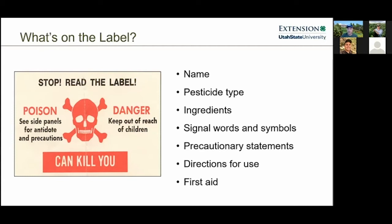Precautionary statements describe certain precautions to protect both the applicator and off-target sites from pesticide exposure. Directions for use — where most of us go first — cover mixing instructions, how much to use per area, and so on. It is a violation of federal law to use these products in a manner inconsistent with their labeling. Labels also contain first aid information, including what to do in case of accidental exposure, which is critical information for physicians or poison control.